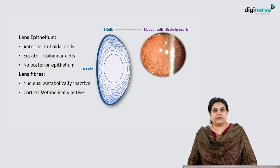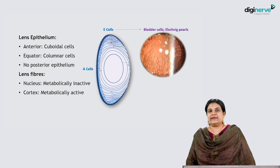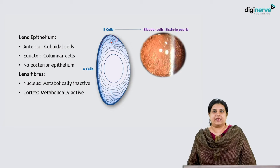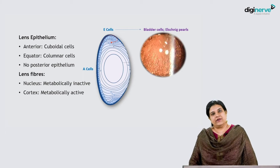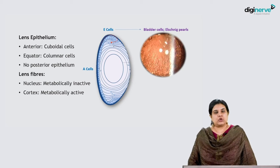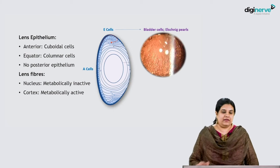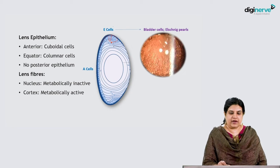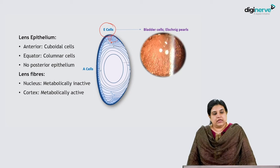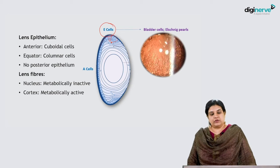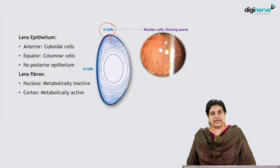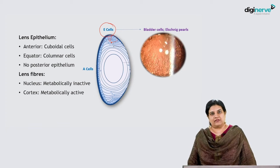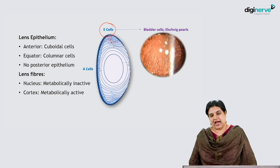The lens epithelium: there is only anterior lens epithelium in adults. The anterior lens epithelium has cuboidal cells, while epithelial cells at the equator are columnar and known as E-cells. Lens fibers in the nucleus are metabolically inactive, while those in the cortex are metabolically active.